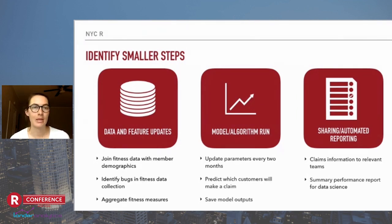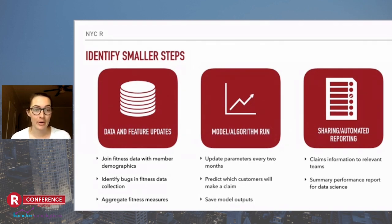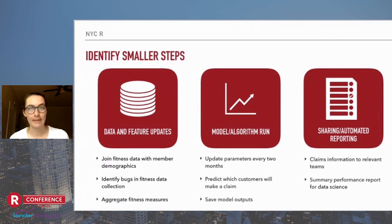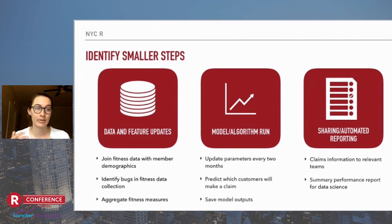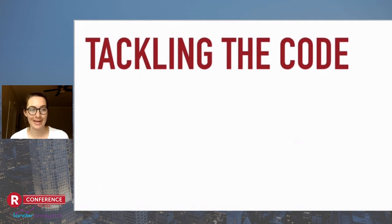This process is really just about making the task of converting proof of concept code to production code more manageable. Once I've sorted my code into these buckets, I can start at the beginning and convert each group systematically. When I'm starting a project, I'll try to keep these buckets in mind and organize my code accordingly. I've worked on teams using Databricks or Jupyter notebook environments, so I'll make a notebook for data cleaning and a separate notebook for the model, so I can think about the order when turning it into production.